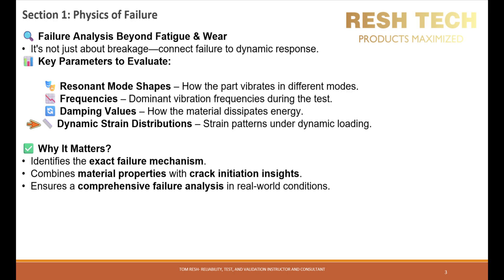Next, let's look at dynamic strain distributions — strain patterns under dynamic loading. Components experience non-uniform strain under vibrations, with high strain regions being the most susceptible to failure. Strain gauges and digital image correlation (DIC) provide real-time strain mapping under dynamic conditions. Dynamic strain distribution helps identify stress concentrations, crack initiation sites, and fatigue hotspots. Combined with FEA, it validates whether the design can withstand expected vibrational loads.